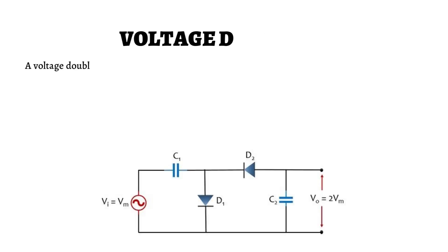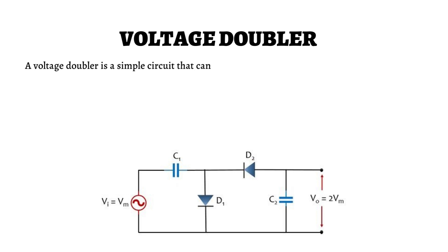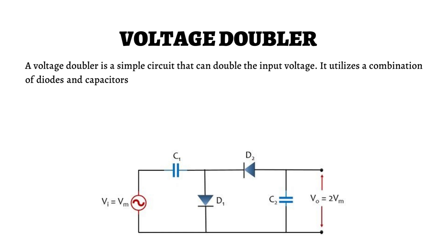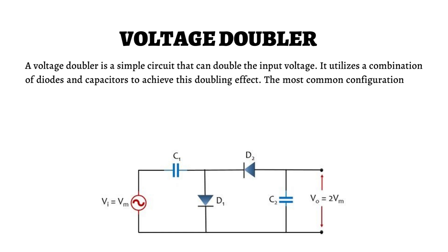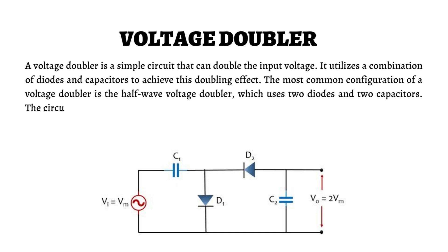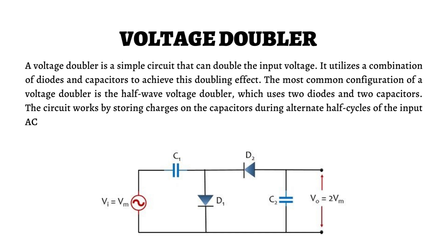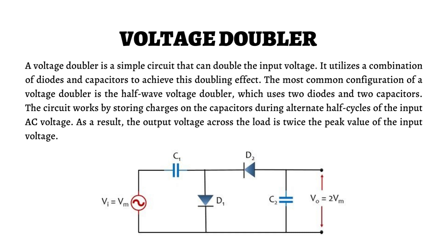A voltage doubler is a simple circuit that can double the input voltage. It utilizes a combination of diodes and capacitors to achieve this doubling effect. The most common configuration is the half-wave voltage doubler, which uses two diodes and two capacitors. The circuit works by storing charges on the capacitors during alternate half cycles of the input AC voltage, resulting in an output voltage across the load that is twice the peak value of the input voltage.